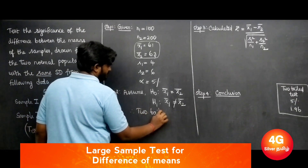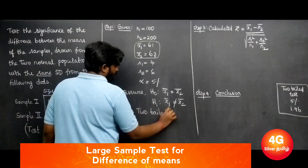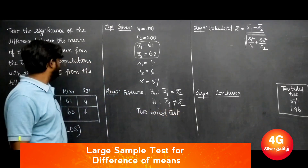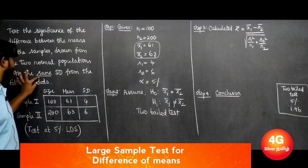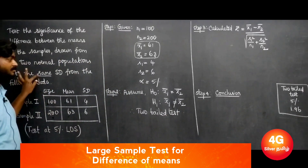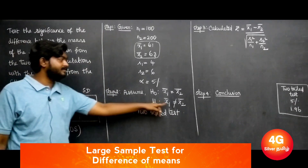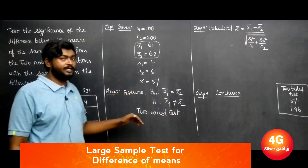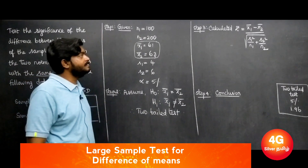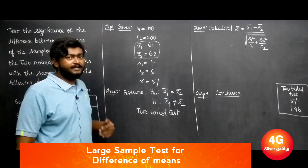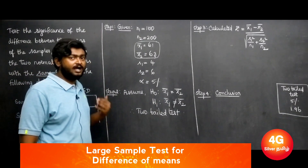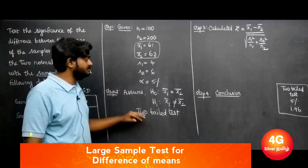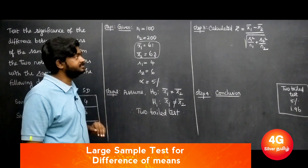This is a 2-tailed test. When the hypothesis states equality (same), it is a 2-tailed test. When the hypothesis uses greater or lesser, that is a left-tailed or right-tailed test. Here, this is the 2-tailed test.